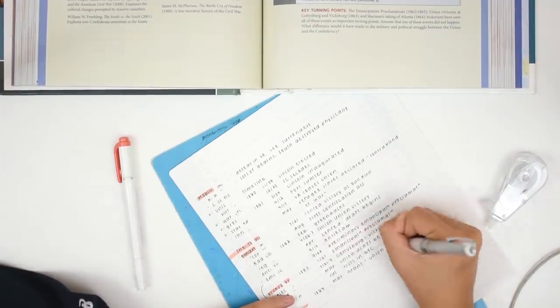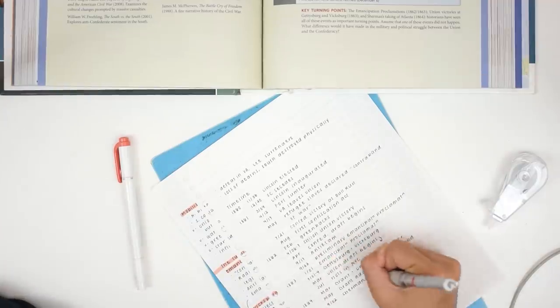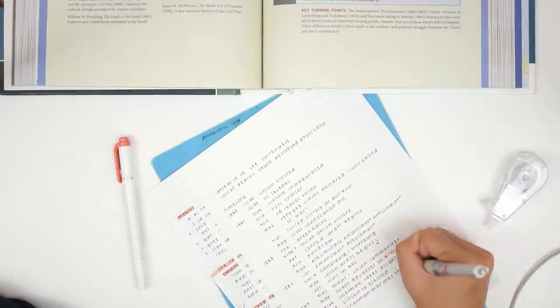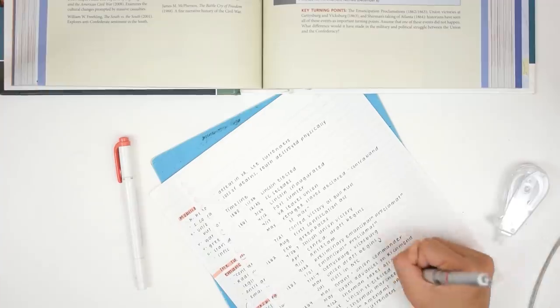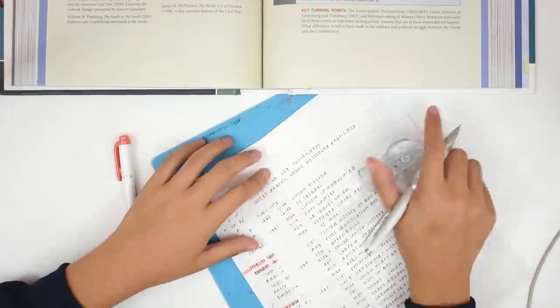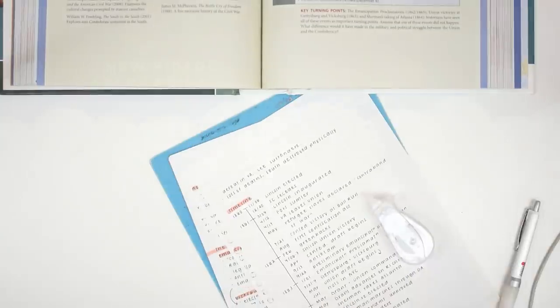I usually finish off my APUSH notes by copying down the timeline that is in the chapter summary of the textbook. This one is of the Civil War, so it's pretty long and detailed with dates and everything. I hope you enjoyed this video and if you'd like to see more study with me videos, I will link them on screen and in the description. I also upload new videos every Friday and you can see pictures of my notes on my Tumblr and Instagram, which are at studyquill. See you next time!